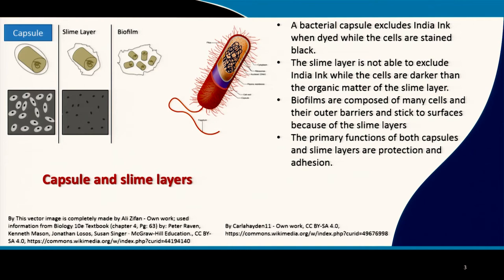Often cells in the environment are found in two forms. They can be encapsulated or they can be without a capsule. You can see a diagram that shows a cell with a capsule around it. This capsule can be seen in a very interesting way. If you take an encapsulated bacteria and dye it with India ink, the cell itself will be dyed but the capsule is not dyed.